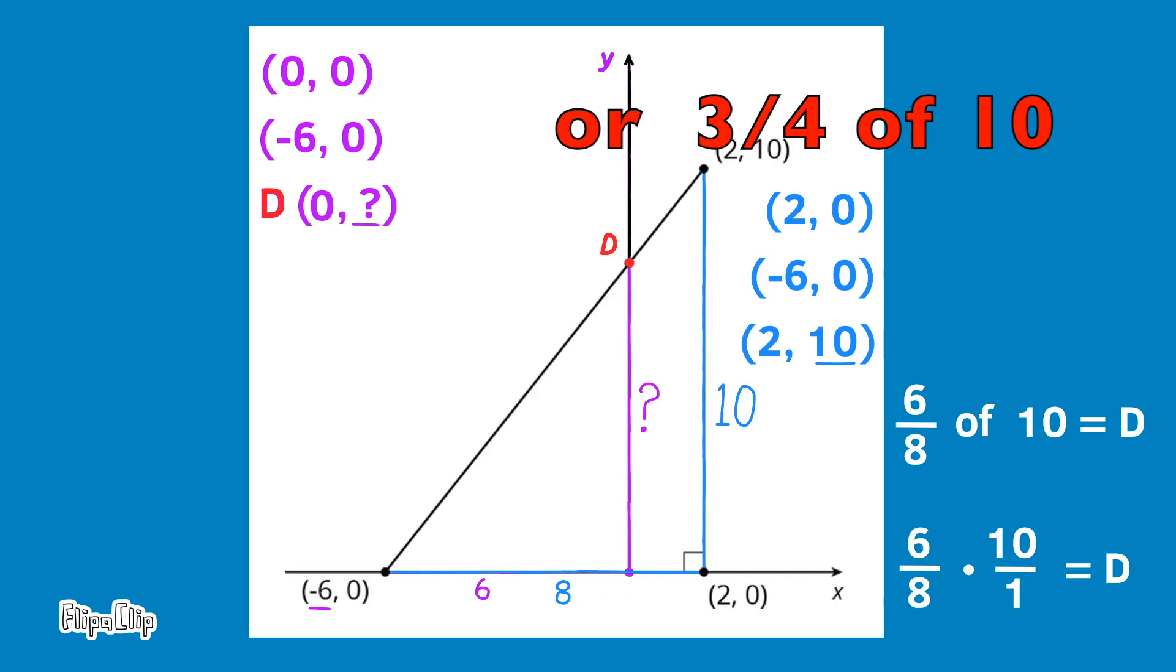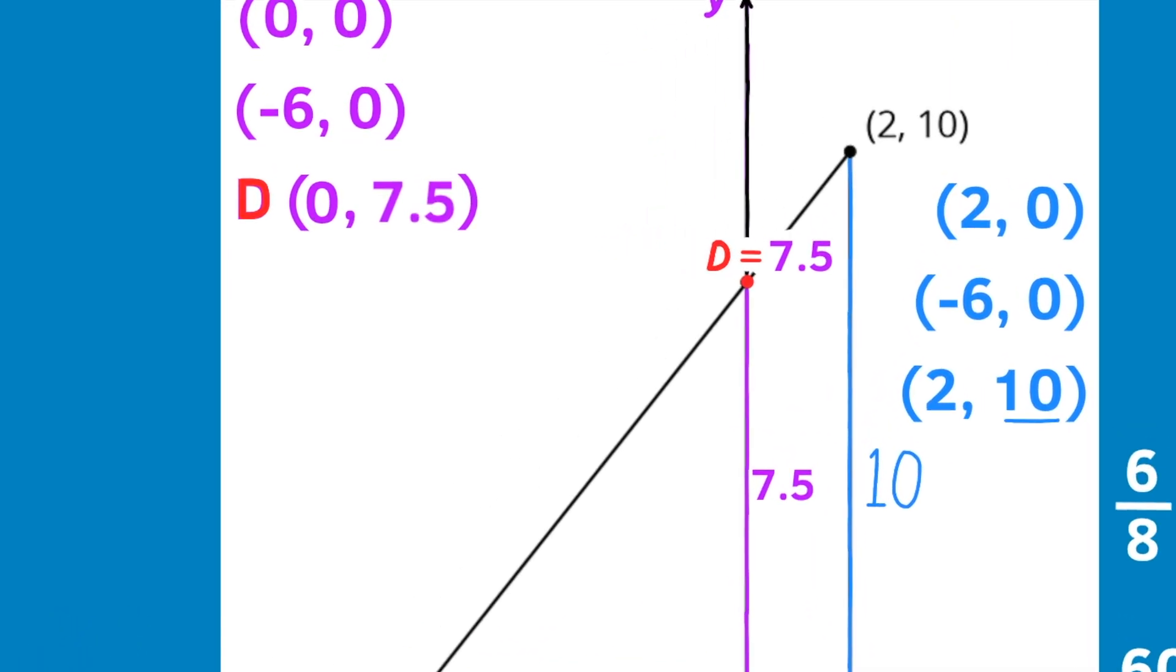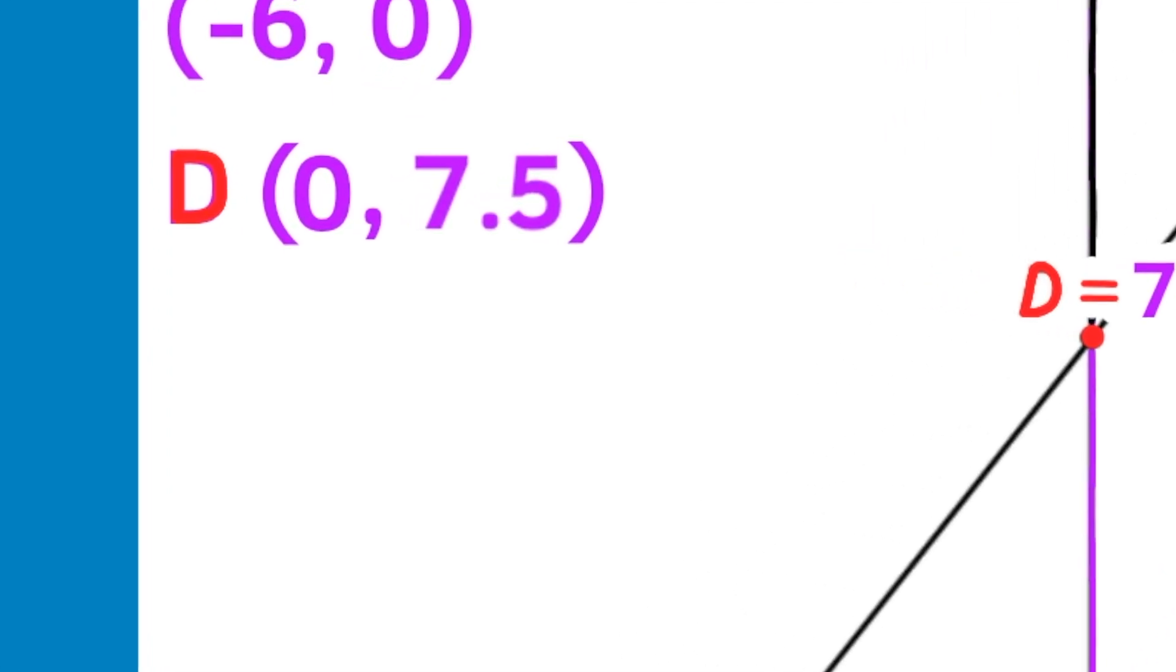6 eighths of 10 equals D. 6 eighths of 10 is 60 over 8. And 60 over 8, or 60 divided by 8, equals 7 and 5 tenths, or 7 and a half. It just occurred to me that 6 eighths is the same as 3 fourths. So I could have just said 3 fourths of 10 is 7 and a half. The coordinates for D are 0 and 7 and 5 tenths.